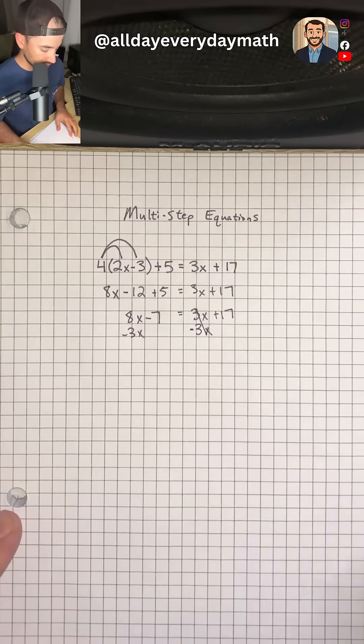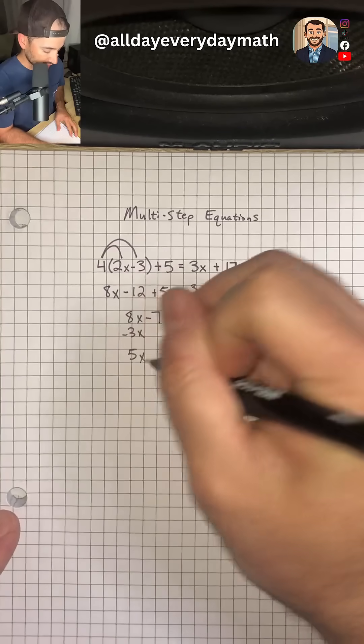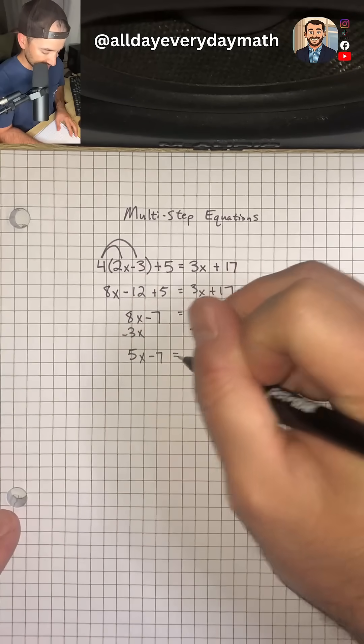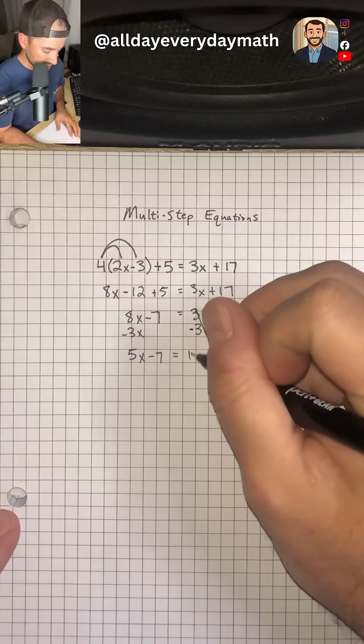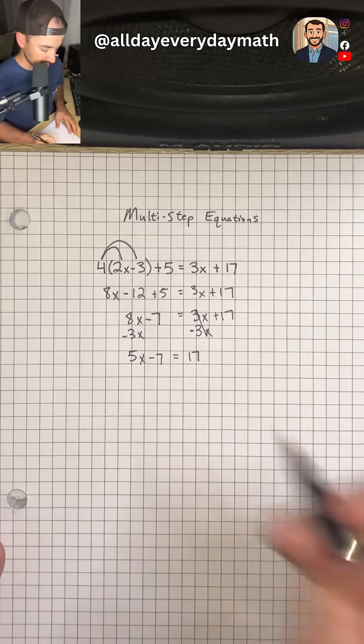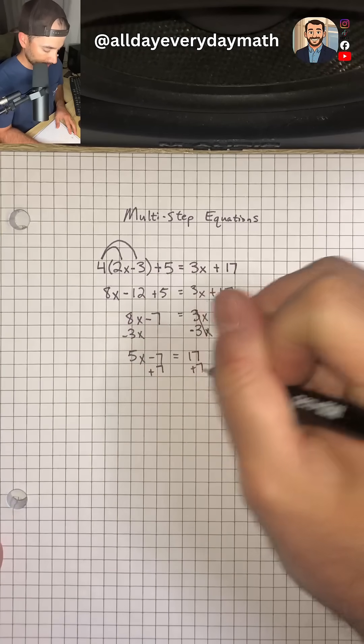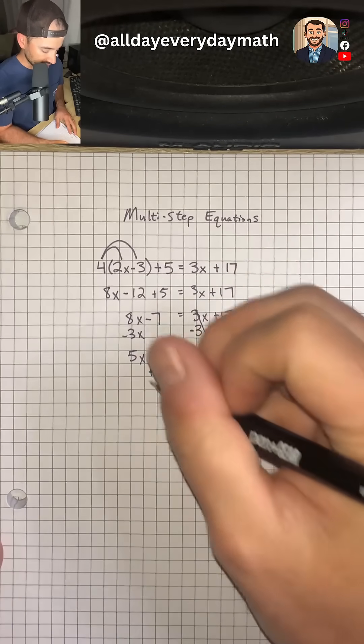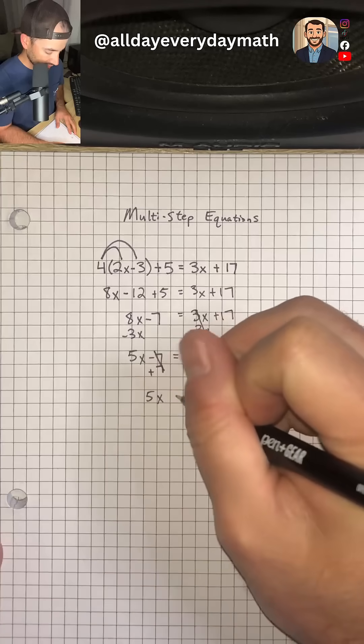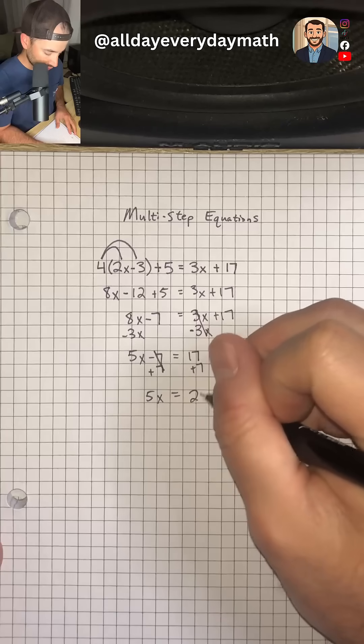So that's going to cancel and leave us with 8x minus 3x, which is 5x minus 7 is equal to positive 17. So now we have a two-step equation. So we want to get rid of this minus 7. And we're going to do that by adding 7 to both sides. That's going to leave us with 5x is equal to 17 plus 7, which is 24.